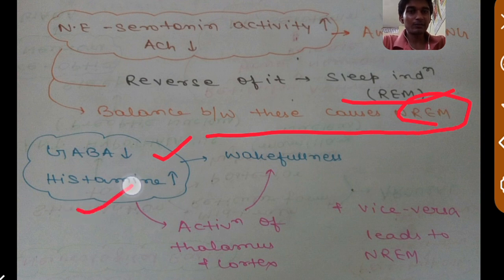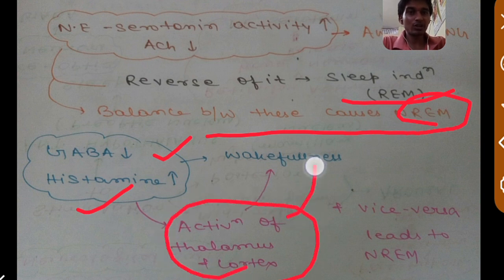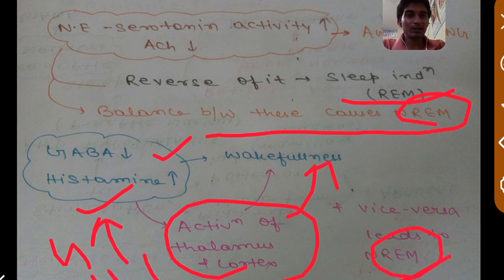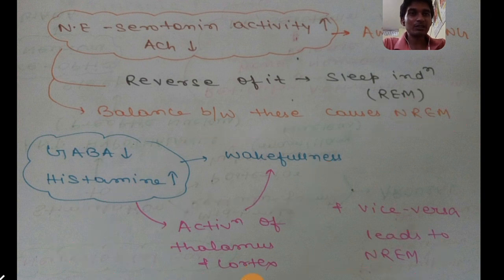When GABAergic neurons are less activated and histamine-releasing neurons are more active, it causes activation of the hypothalamus and cortex, leading to wakening of the animal. Conversely, when GABA increases and histamine decreases, it causes NREM sleep through deactivation of the thalamus and cortex.